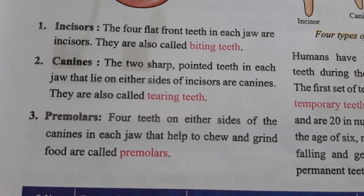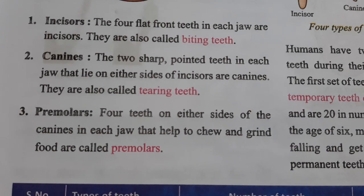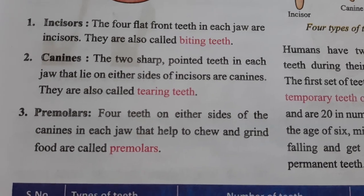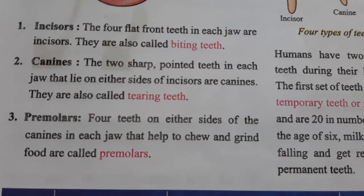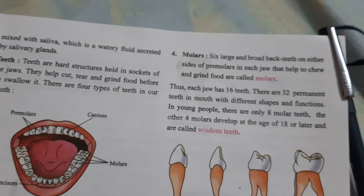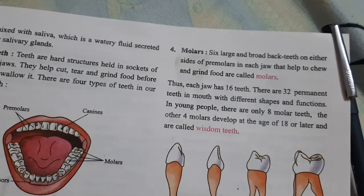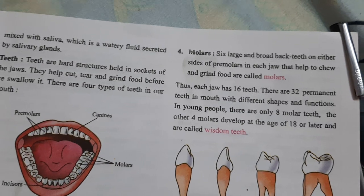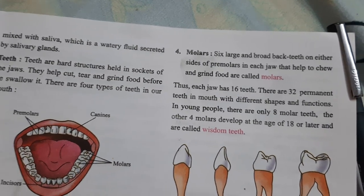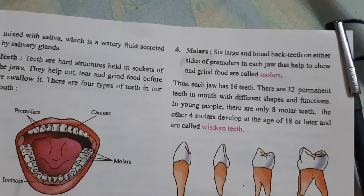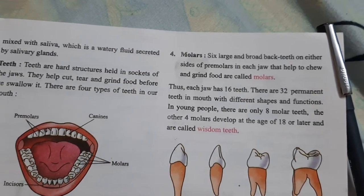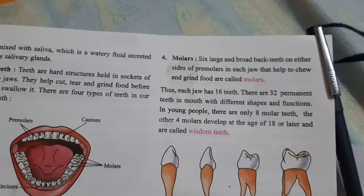Premolars are the four teeth on either side of the canine in each jaw that help to chew and grind food. Molars are the six large and broad back teeth on either side of the premolars in each jaw that also help to chew and grind food. Thus each jaw has 16 teeth, making 32 permanent teeth in the mouth with different shapes and functions.